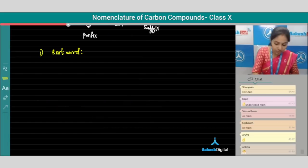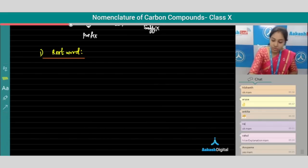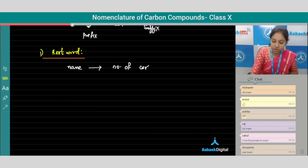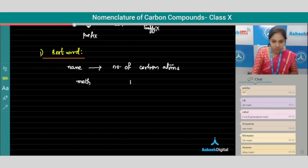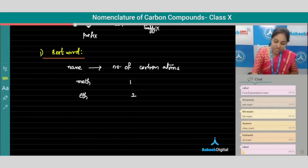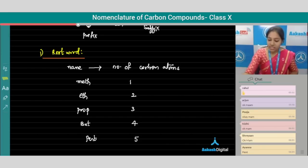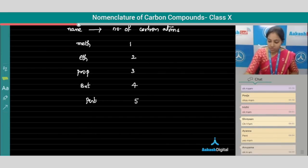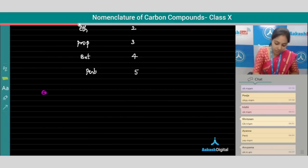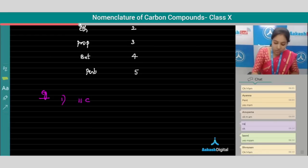The root word is the name considered for the number of carbon atoms in a given compound. For example, if there is one carbon atom, the name is 'meth'; two carbon atoms is 'eth'; three is 'prop'; four is 'but'; and five is 'pent,' and so on. Let us understand root word with different examples.